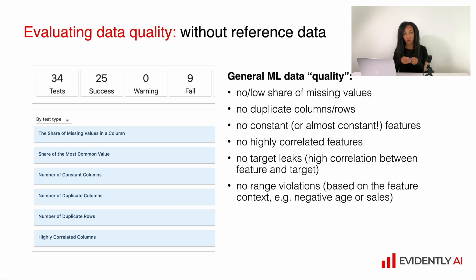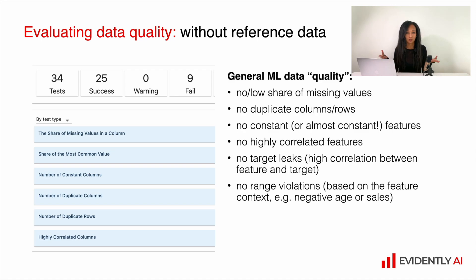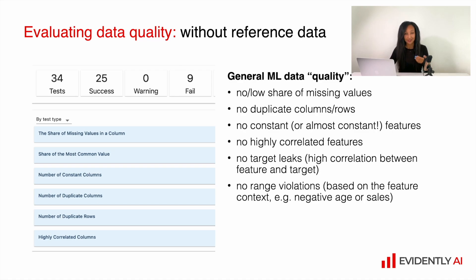If there are some important features, you might create some alerts on range violations. For example, based on the feature context or your expertise in the domain area — if you know that a feature is dedicated to salary and another to age, then based on domain expertise, we can say that values should at least be non-negative. That's how you can set up monitoring without any reference data.